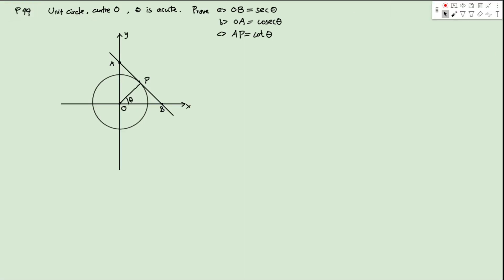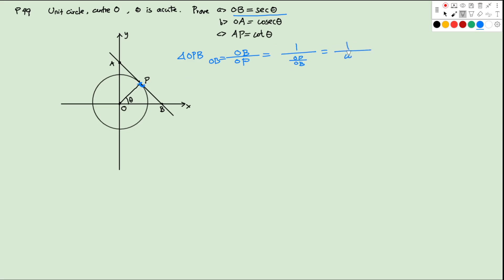Let's take a look at the first question, which is on page 49. We have a unit circle, center O. P is a point on this circle, angle theta is acute, and AB is tangent to this circle at point P. We want to show OB equals sec theta. Consider triangle OPB — this angle is 90 degrees. So OB over OP, with OP equal to 1, gives OB. We can write this as 1 over (OP over OB), and OP over OB is cosine theta, so it's 1 over cosine theta, which is sec theta.